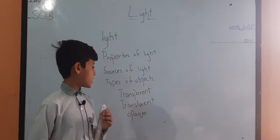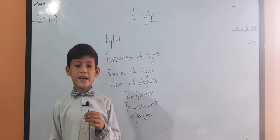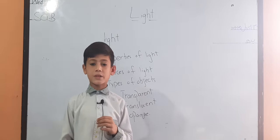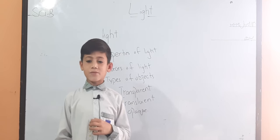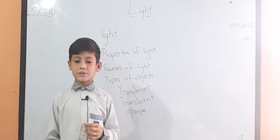Light object. There are three types of objects: transparent object, translucent object, opaque object. Transparent object: the object is allowed like this. It's called transparent object.